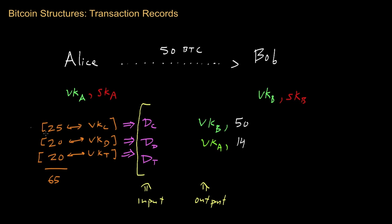Alice will then take all of this transaction data — the input and the output — and digitally sign it using her signing key SK_A, just as you would with a digital signature. She appends that signature to the contents of the transaction record, which effectively binds Alice's identity to the transaction. Anybody who possesses Alice's public key, which is made public, can validate that only Alice could have created this record, since only Alice should possess the private signing key corresponding to her public key.